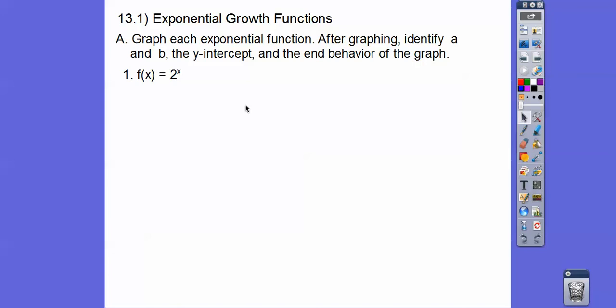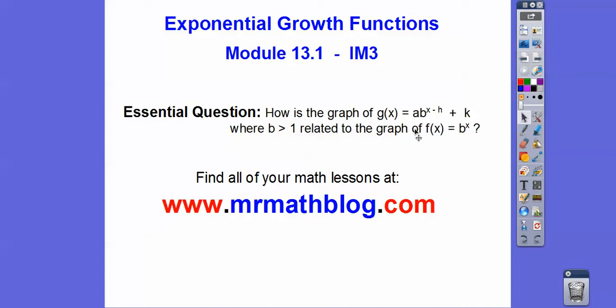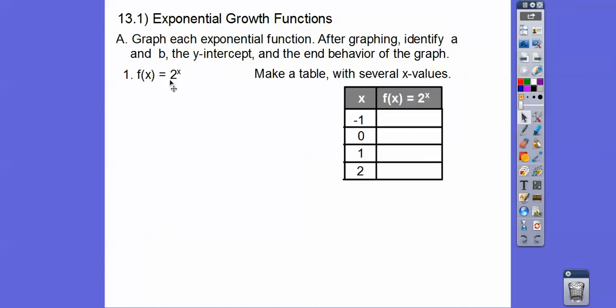After graphing, identify a and b. So a and b are these numbers. A is this number right here, so the a on that one is 1 and b is that 2. So this is 1 times 2 to the x. Let's make a table of values to graph these. Plug in negative 1. 2 to the negative 1 power is 1 over 2 to the positive 1 power, which is 1 half, which is 0.5. Plug in 0. 2 to the 0 is 1. 2 to the 1 power is 2. 2 to the 2 power is 4.